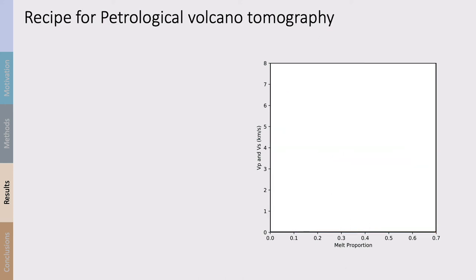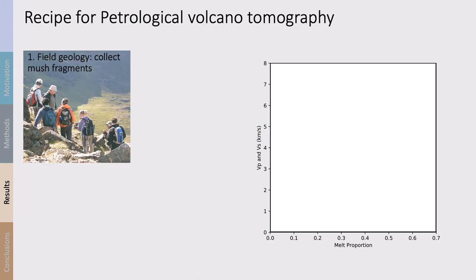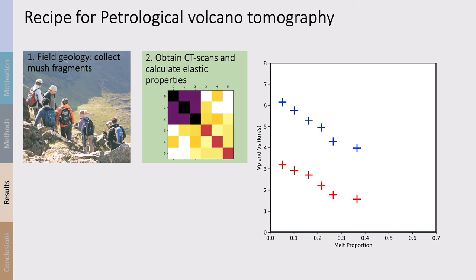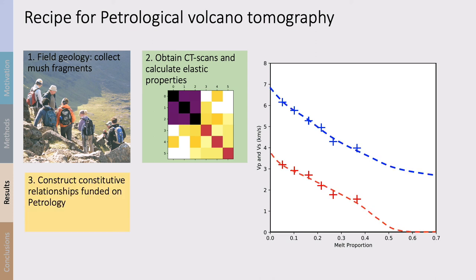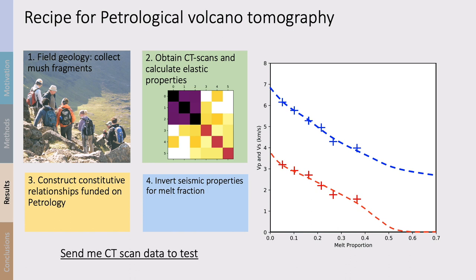I envisage a sort of petrological volcano tomography. We would go out in the field, collect rock samples containing mush fragments, CT scan those samples, calculate the elastic properties with the methods I've described, and construct constitutive relationships based on the petrology and microstructure for a particular volcano. We would use those new relationships to invert seismic properties for melt fraction. We're at an early development stage and I welcome comments on mush microstructure and homogenization methods — and if you have CT scan data for glomerocrysts or other relevant samples, do send them along.